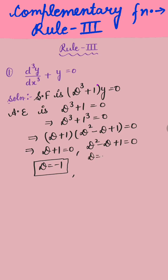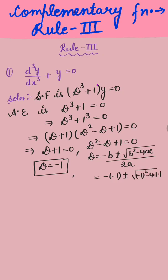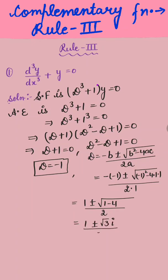For the quadratic factor, we use the formula D = (-b ± √(b² - 4ac)) / 2a. Substituting values: D = (1 ± √(1 - 4)) / 2 = (1 ± √(-3)) / 2 = (1 ± √3 · i) / 2, because √(-1) = i.